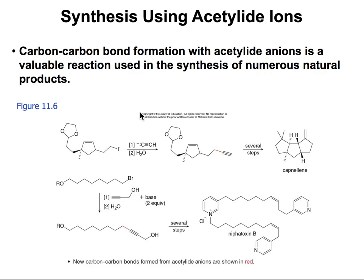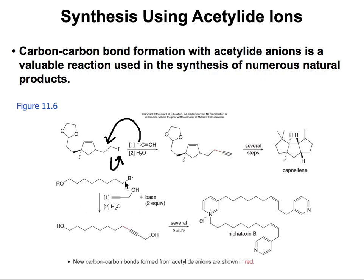The acetylide ion is used often in chemistry. Here we have an SN2 reaction where the alkyne is treated with a base to give the acetylide, and then the acetylide reacts with a bromine-bearing carbon, extending the chain. By mixing the terminal alkyne with the base we get the acetylide, and then that acetylide attacks the C–Br bond via SN2.